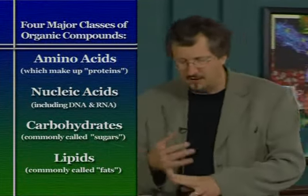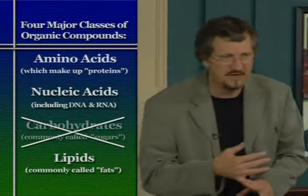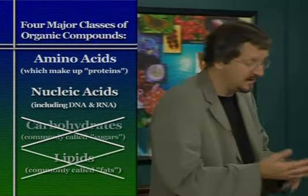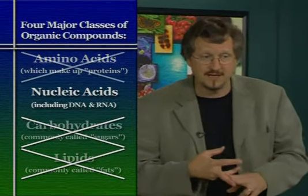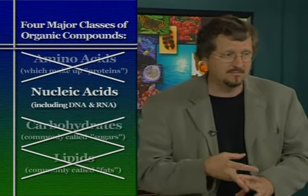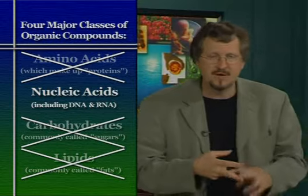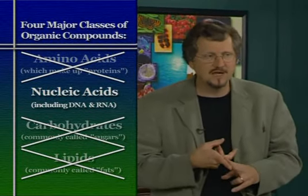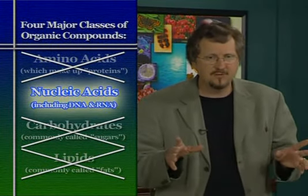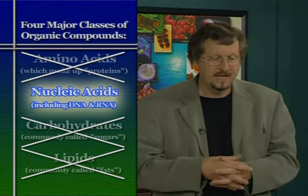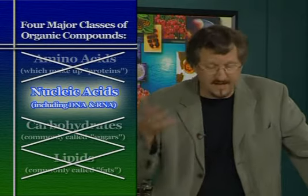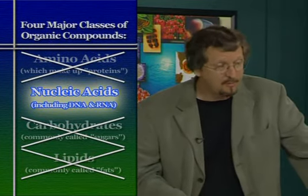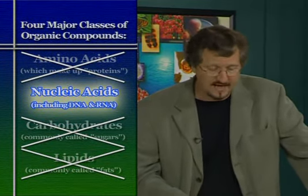Here's what they found: they could break down the carbohydrates — no problem, transformation still occurred. They could break down the lipids — no problem, still got transformation. They could break down the proteins — still got transformation. But if they broke down the nucleic acids, transformation stopped. They concluded in a straightforward way that the transforming principle Griffith had discovered must therefore be some kind of nucleic acid.